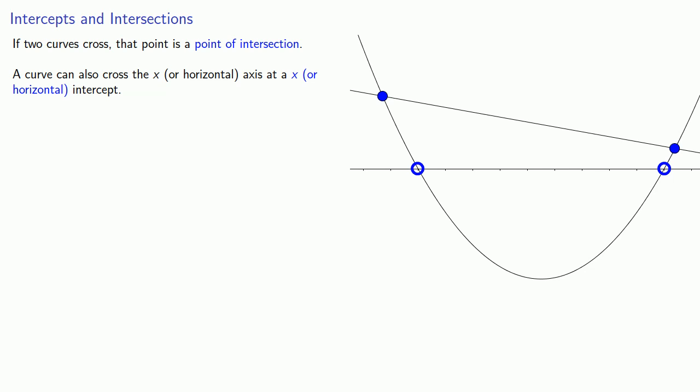Similarly, someplace floating around, there's a y-axis. And we can talk about the y-intercepts. And again, because the x and y-axes don't really exist, we call these intercepts and not intersections.